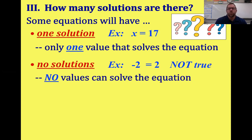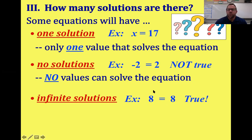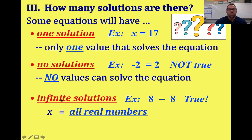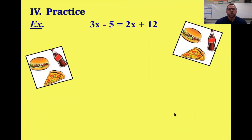The final possibility is infinite solutions — I call this the Buzz Lightyear answer. If you solve and end up with two identical numbers equaling each other, like 8 equals 8, that's a true statement. When that happens, your answer is all real numbers, or infinite solutions — every number will work. I'll now do one example of each: one solution, no solution, and infinitely many solutions.